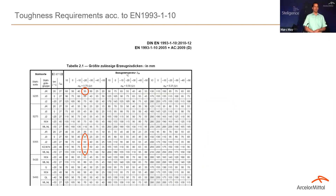On toughness requirements: in Germany, S235JR is still quite often used. Looking at this table from Eurocode 3 clause 1.10 dedicated to toughness requirements, for a reference temperature of minus 20 degrees, the maximum thickness of S235JR would be 35 mm. Some people fear that going for a higher grade would require reduced thickness. However, comparing S355JR with S235JR, already with an S355J0 you have the same maximum thickness as S235JR. So the steel, in terms of requirements, is not much more expensive, and you have a quite economical steel to replace the basic one.